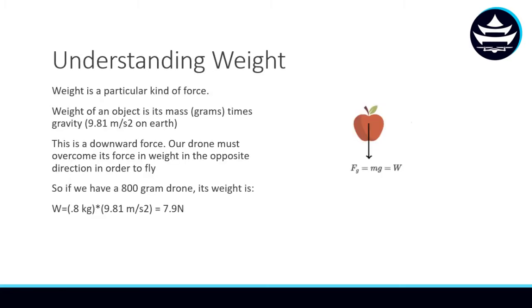Let's understand weight a little more intuitively. Weight is a particular kind of force. Weight is an object's mass times gravity, which is 9.81 meters per second squared on Earth in the metric system. This is a downward force. Direction matters with forces, as we saw in the previous slide, because forces can cancel out. Our drone must be able to overcome its force and weight in the opposite direction in order to fly. If we have an 800-gram drone, its weight in newtons is 0.8 kilograms times 9.81 meters per second squared, which will be 7.9 newtons. So, our weight of an 800-gram drone is 7.9 newtons.